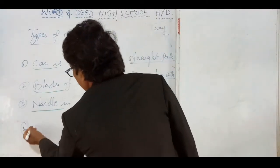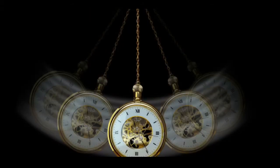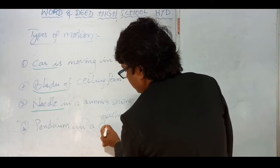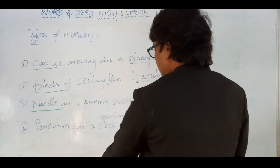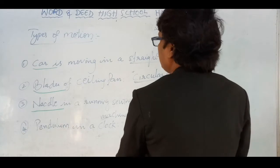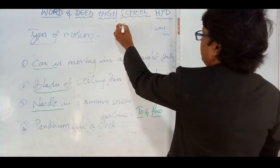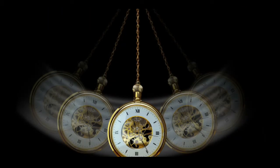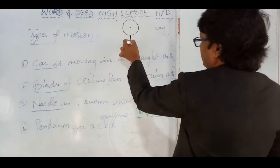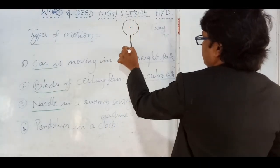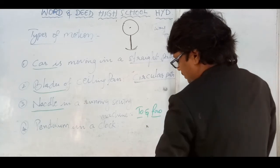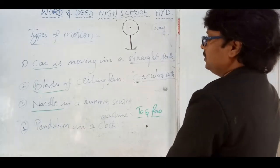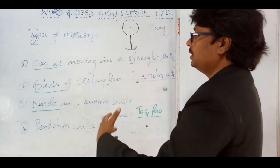The fourth example is a pendulum in a clock. You know what a pendulum in a clock is? Let me draw the diagram. If you take a clock like this, there is a hand hanging freely and moving out of the clock. You can see it moves like this — side to side. This is also to-and-fro motion. So you can understand the movement of objects in different situations.